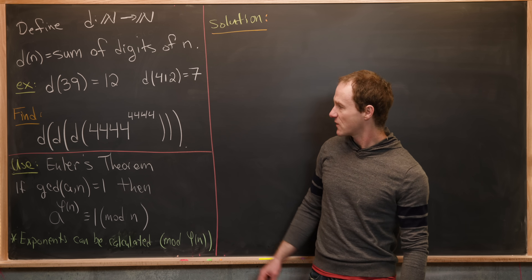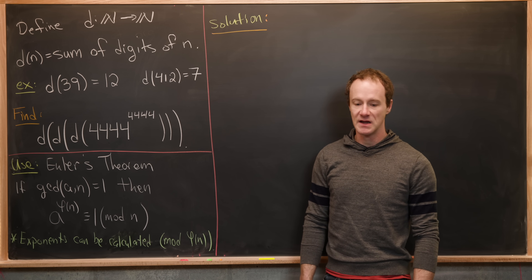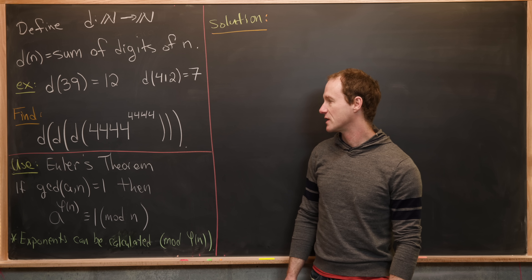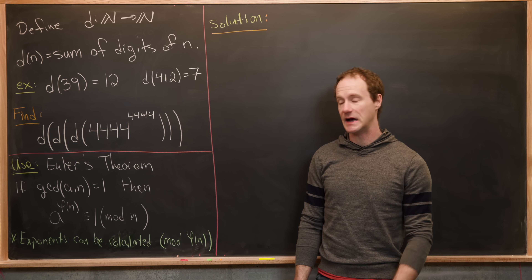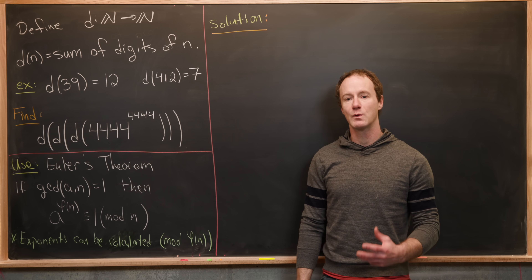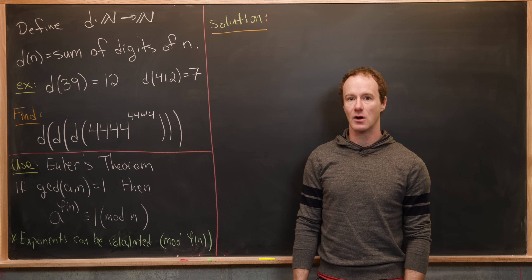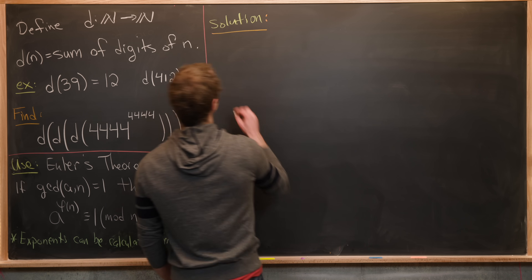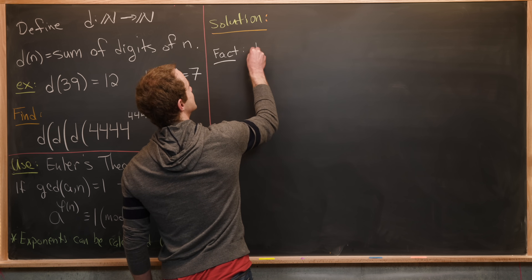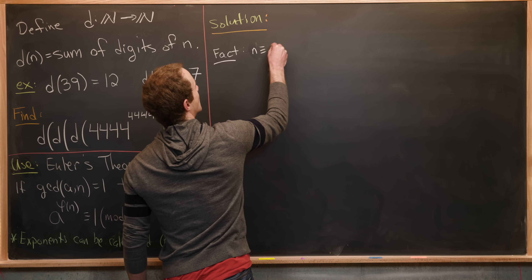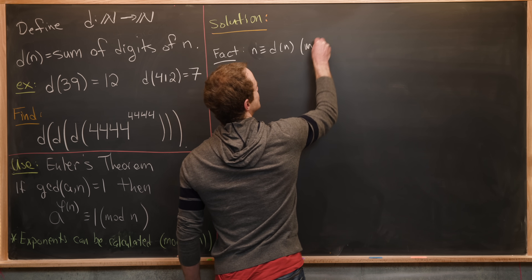Instead of calculating anything to do with the digit sum directly, let's first see what 4444^4444 is congruent to mod 9. Why mod 9? Because the digit sum of a number and the number itself are congruent mod 9. That is, n ≡ d(n) mod 9.